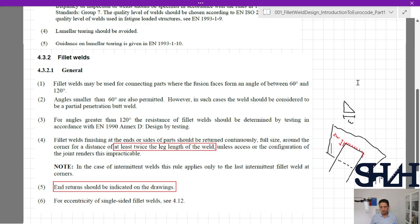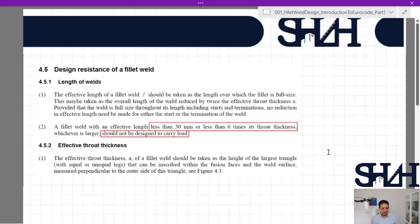For eccentricity of single-sided fillet welds, we can check 4.12 plus 4.5. Design resistance of a fillet weld: Length of welds—the effective length of a fillet weld L should be taken as the length over which the fillet is full size. This may be taken as the overall length of the weld reduced by twice the effective throat thickness A, provided that the weld is full size throughout its length, including starts and terminations. No reduction in effective length need to be made for either the start or the termination of the weld.